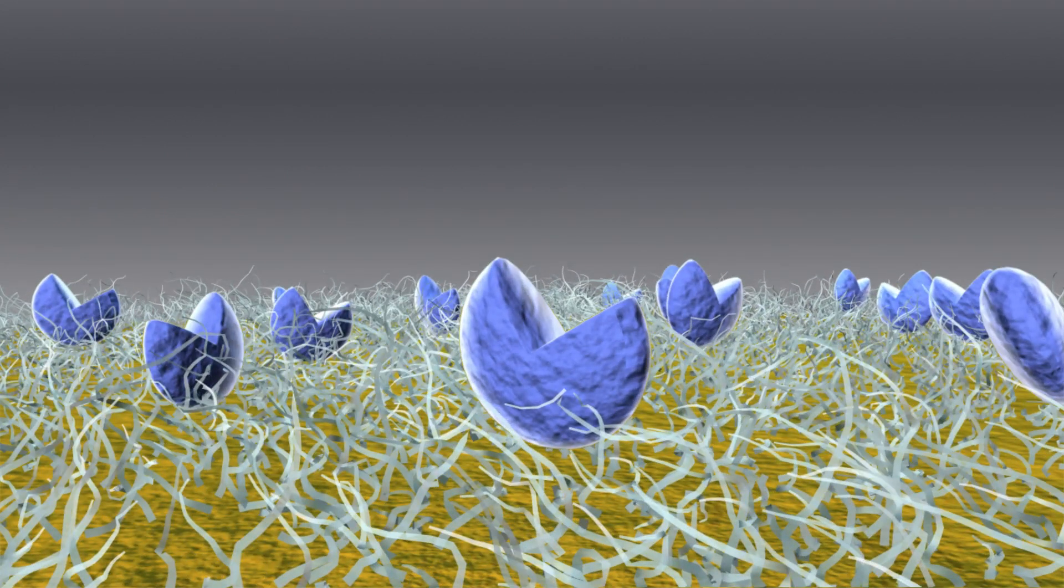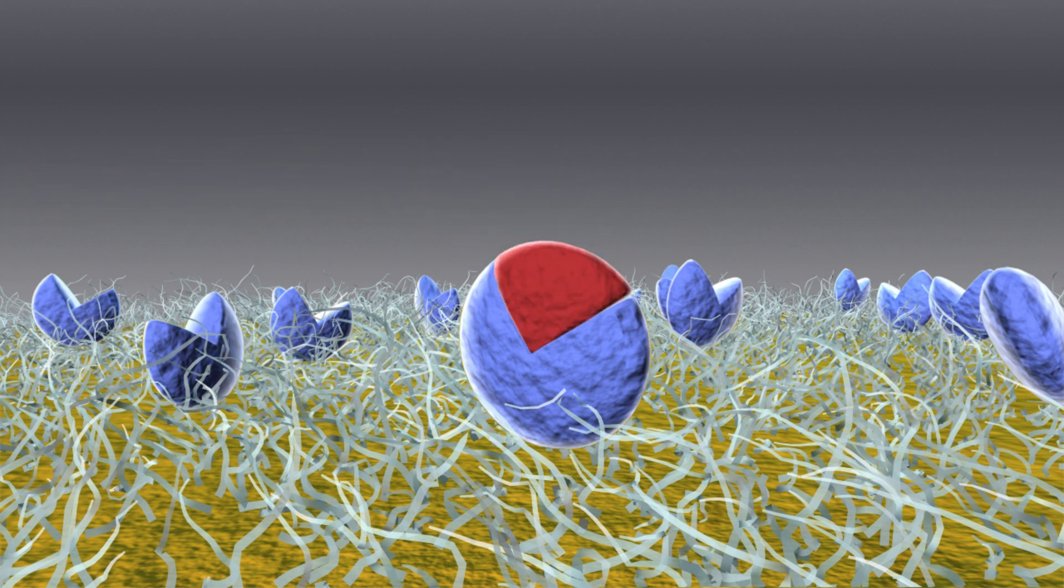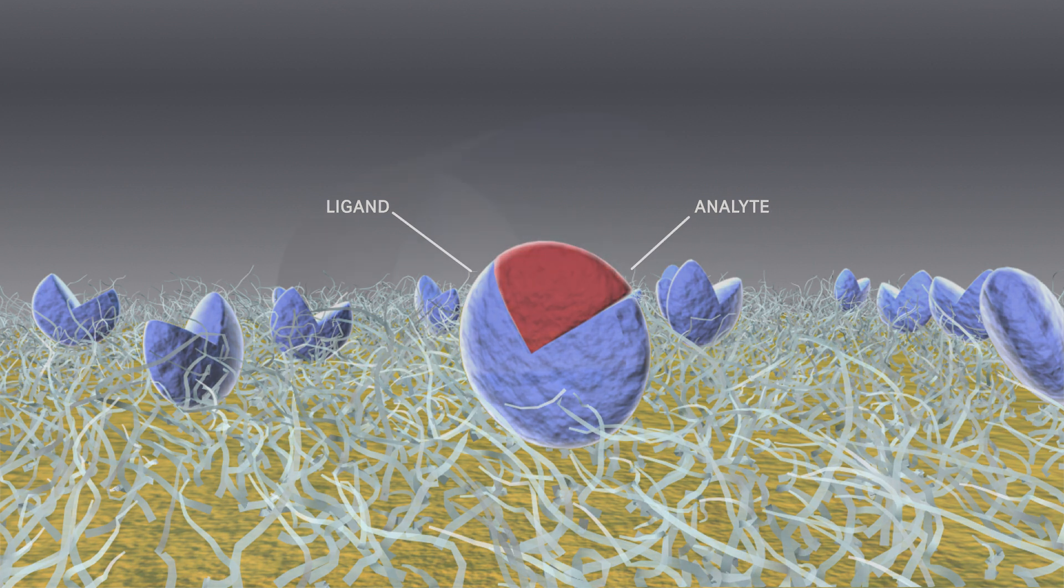So one binding partner is attached to the surface of a sensor chip, and the other is injected in a continuous flow of solution. Whatever the nature of the molecules involved, we call the attached interacting partner the ligand, and the partner in solution the analyte.